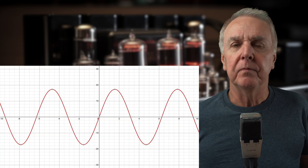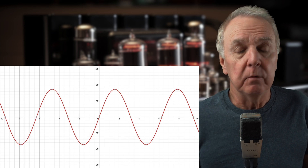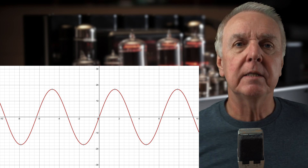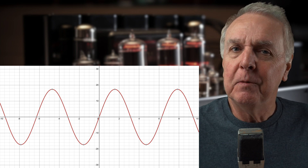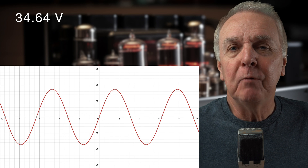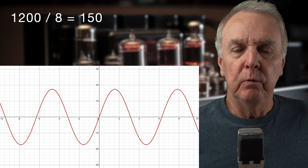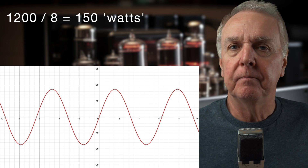But how do we measure the voltage? Let's take a sine wave — here's one. You can see that it has a positive peak and a negative peak. So we could measure the voltage between the positive peak and the negative peak, square it, then divide by the resistance of the load. Say the peak-to-peak voltage is 34.64 — a nice round number. Square that and we get 1200. Divide by 8 ohms, which is typical of a loudspeaker, and we get 150 — 150 watts.